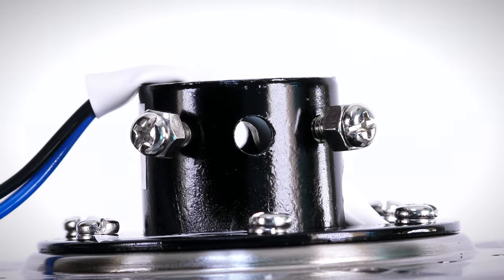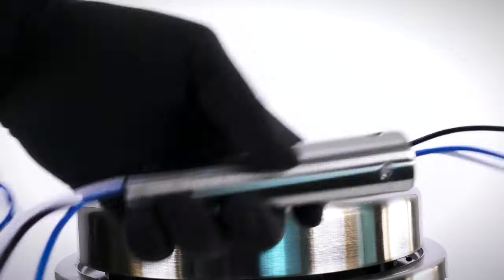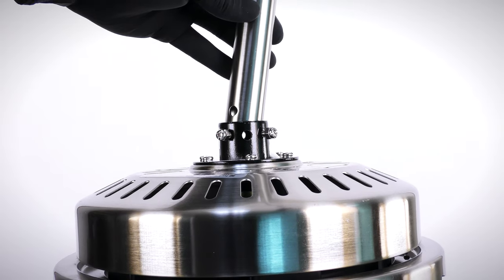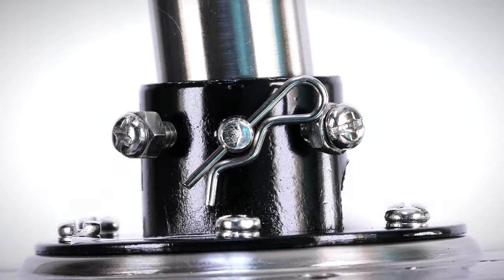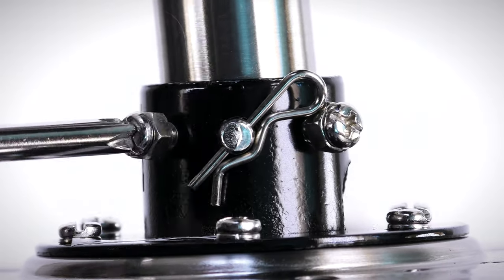Loosen the 2 collar set screws. Guide the motor wires through the downrod and insert it into the collar. Align the holes and insert the clevis pin and cotter pin. Tighten the 2 collar set screws.